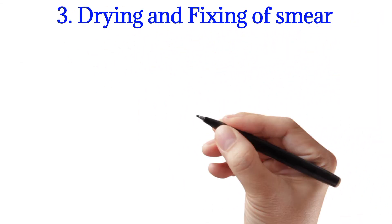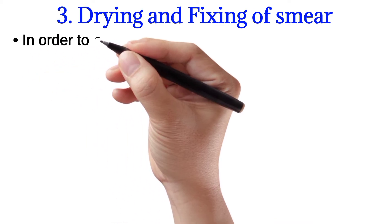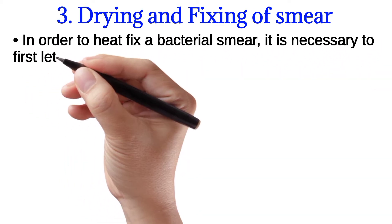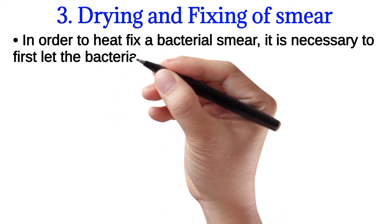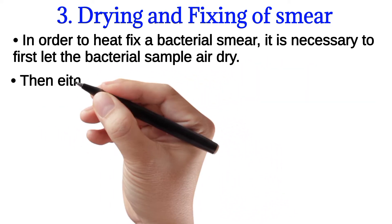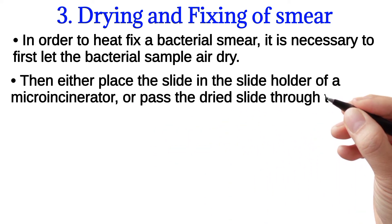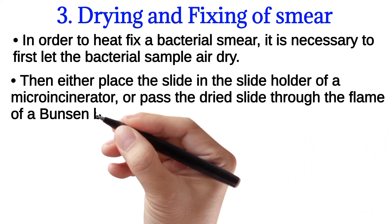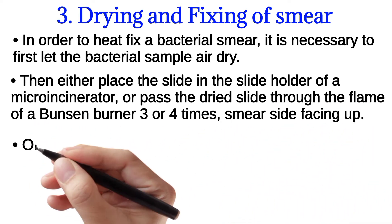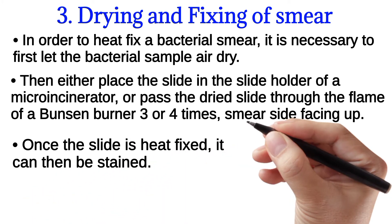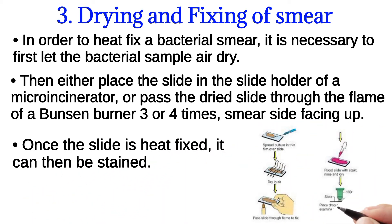Drying and fixing of smear. In order to heat fix a bacterial smear, it is necessary to first let the bacterial sample air dry. Then either place the slide in a slide holder of a micro incinerator, or pass the dried slide through the flame of a Bunsen burner 3 to 4 times with the smear side facing up. Once the slide is heat fixed, it can then be stained. This picture shows the process of drying and fixing of smear.